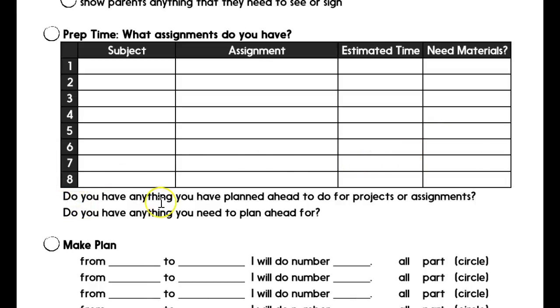After the child fills in what they know they have come home with, I have a couple of other questions for them to think about. Do they have anything that they've planned ahead to do for projects or assignments? Sometimes they'll have something that is maybe a two-week project where they didn't need to do it the very day it was assigned but they planned out to do it. Maybe today I need to read 15 pages of Huckleberry Finn or watch this video or get something for a group project. If they have anything that they planned ahead to do, then they need to list that here. And then did they have anything that they need to plan ahead for?